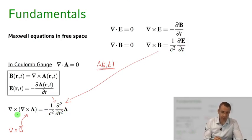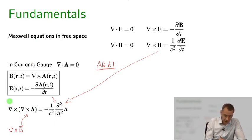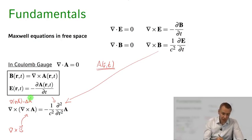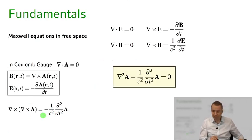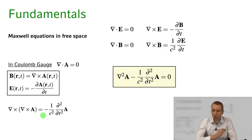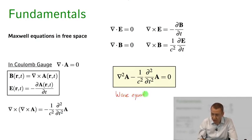Now let's calculate the left-hand side using vector calculus: curl of curl of A equals the gradient of the divergence of A minus the Laplacian of A. Since we're in the Coulomb gauge, the divergence of A vanishes, leaving us with minus the Laplacian of A equals minus 1 over c squared d²A/dt². This is just the standard wave equation for the vector potential with propagation speed c.